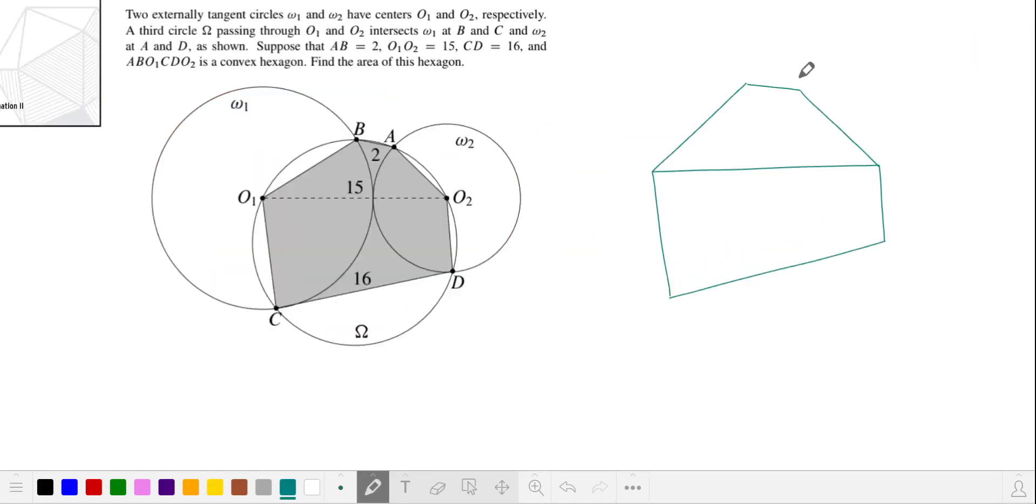Let's return to the problem. An AMC hack is to draw simplified diagrams in your geometry problems when it gets too complicated. I have here the hexagon. Let's say the radius of circle omega 1 is r. So we have O1C and O1B are both r. The distance from O2 to A and D is s. That'll be the radius of circle omega 2. We're given that CD is 16 and AB is 2.